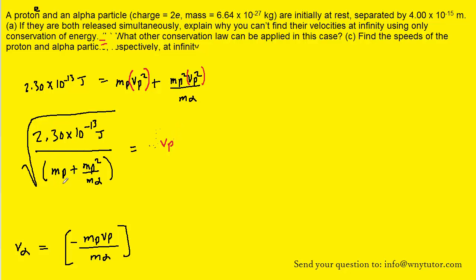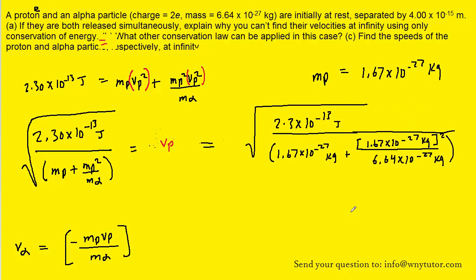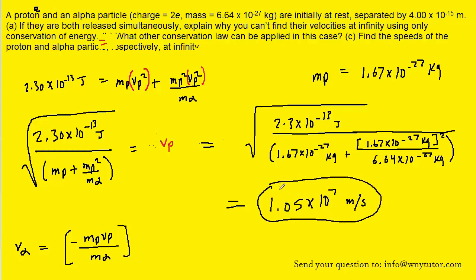We can now plug in the known values. The mass of the proton appears twice in the denominator and should be about 1.67 times 10 to the minus 27 kilograms. Don't forget to square the mass of the proton in the numerator. When you solve, you should get 1.05 times 10 to the power of 7 meters per second — the correct answer for the speed of the proton.